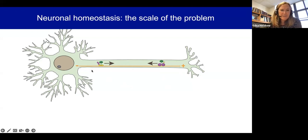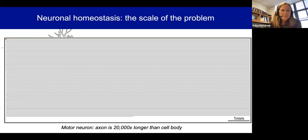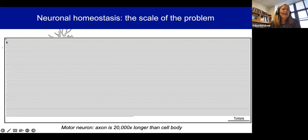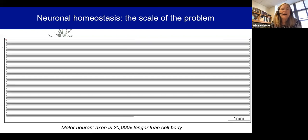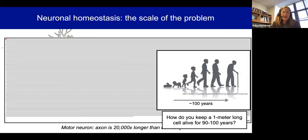This all seems fairly simple in a cartoon of a neuron, but we have to remember the real scale of the problem. What is drawn here is a human motor neuron drawn to scale. This little red dot up here is the soma or cell body, which is the primary site of biosynthesis of new proteins, lipids, and RNAs. Down here is the neuromuscular junction, the business end where this neuron contacts the muscles it's innervating. You have to have active transport along this length, which can be up to a meter or more in humans. And we don't need to just do this for a little while — we have to keep these cells alive for 100 years, hopefully.